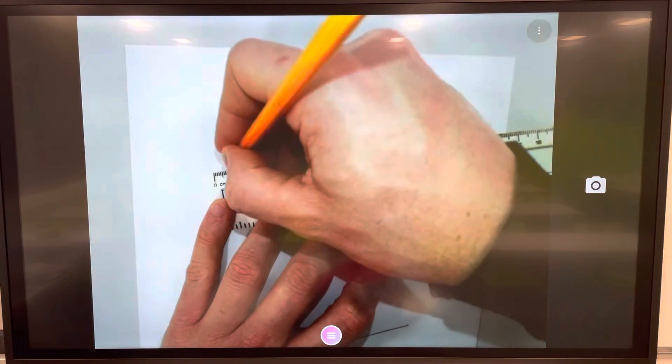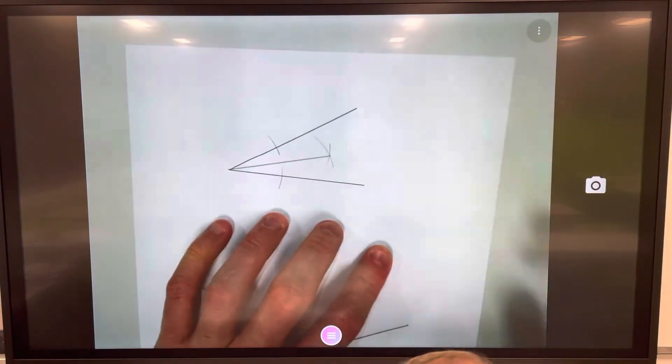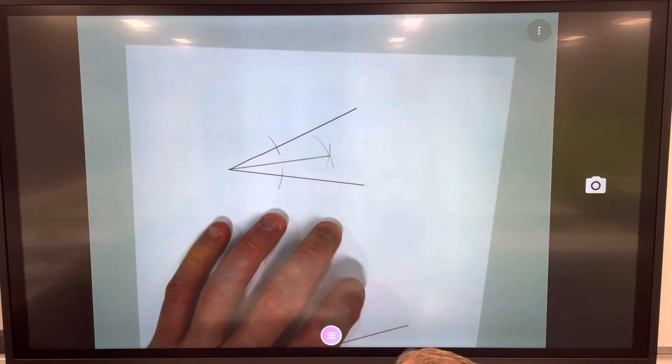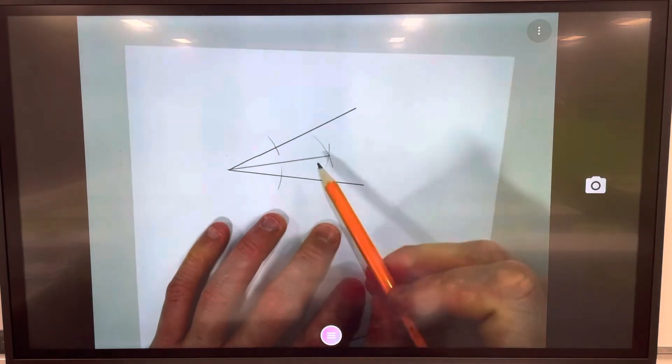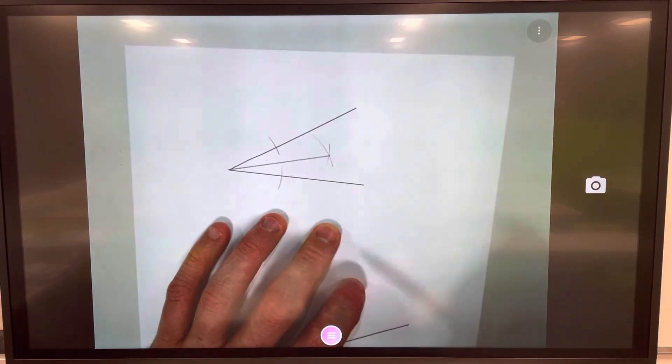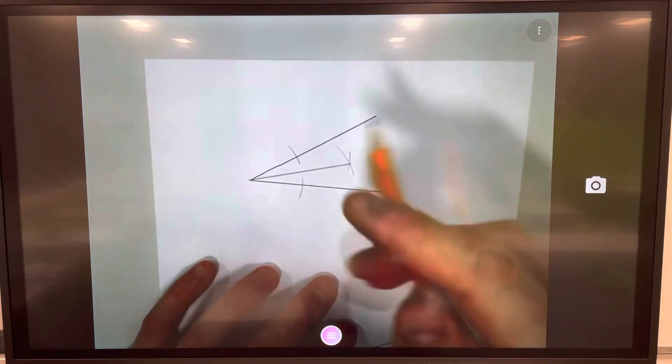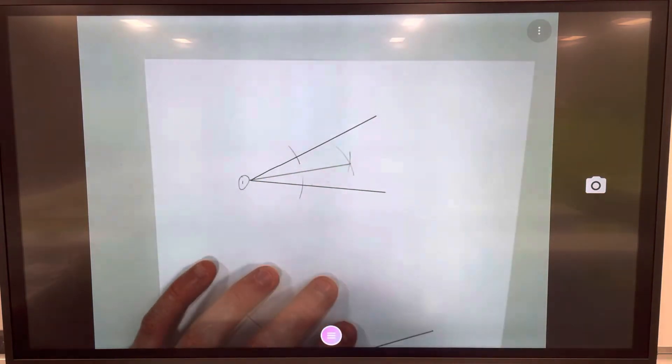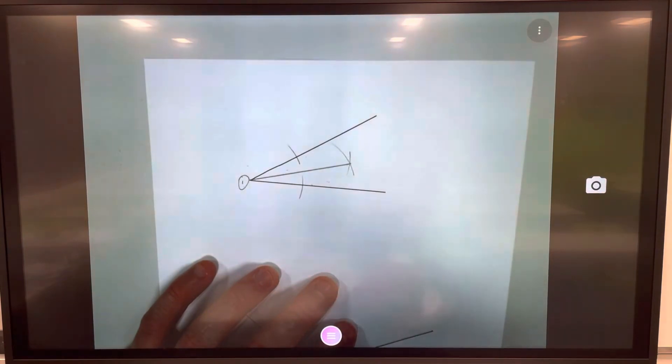That means it is now bisected. That is a bisector of an angle. You can see both of these side angles are the same. So if I put some numbers here, that's where my sharp point of the compass went to start off with, I then rotated here.